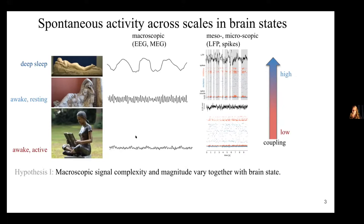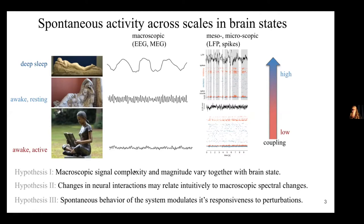So, I offer three hypotheses here. The first is that macroscopic signal complexity and magnitude vary together with brain state. Second hypothesis is that changes in neural interactions may relate intuitively to macroscopic spectral changes. And a third hypothesis is that spontaneous behavior of the system modulates its responsiveness to perturbations.